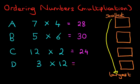And lastly, we've got 3 times 12. So what is 3 times 12? It is 36. So that's the first step done. We have calculated each of the multiplication questions. We can now begin to order them.